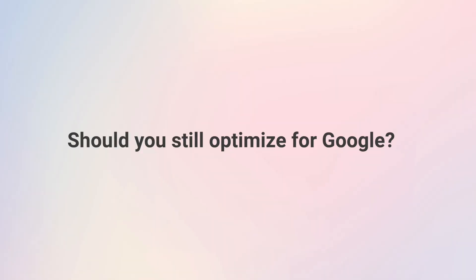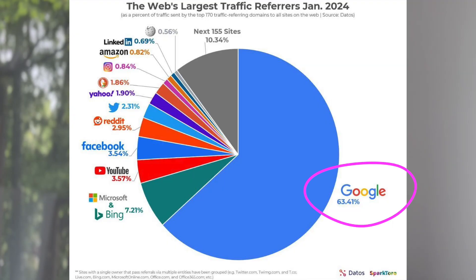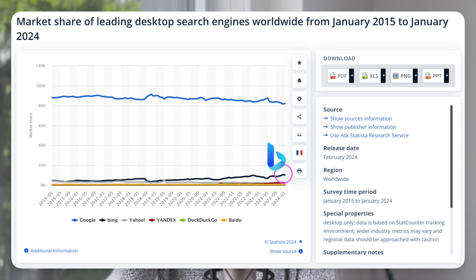Should you still optimize for Google? My short answer is yes, but I want to emphasize a mindset shift: diversify your search optimization efforts beyond just Google. Although Google is currently still the biggest source of traffic, I believe that is changing. As more AI-powered search engines emerge and user behavior shifts, Google's dominance in search won't be as strong. Bing is taking up space, and advancements in GPT models and Copilot will only get smarter — and so will all AI search engines.